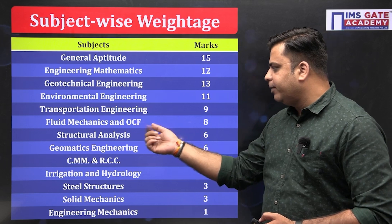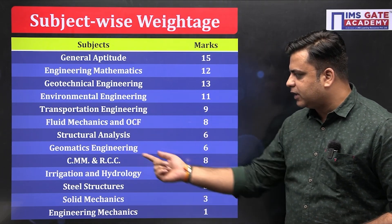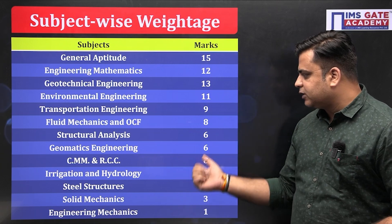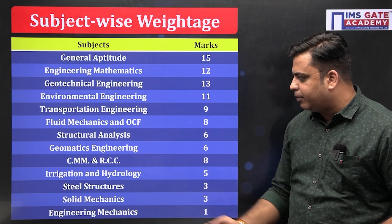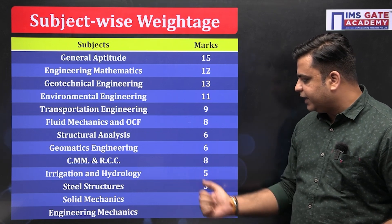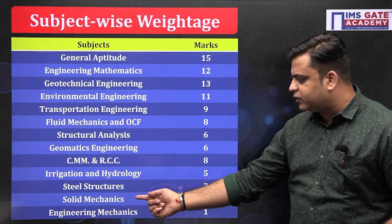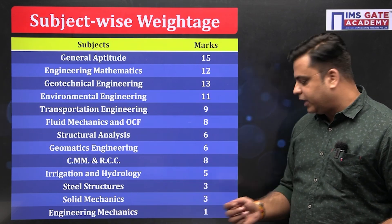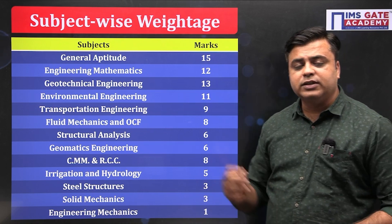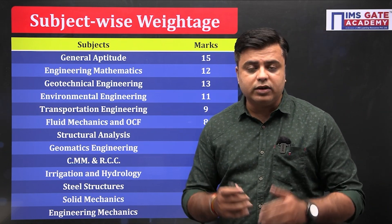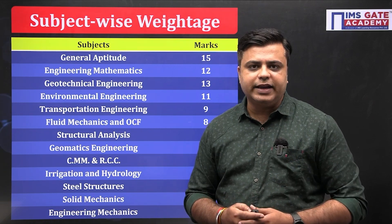Moving ahead: fluid mechanics and open channel flow is asked for 8 marks, structural analysis for 6 marks, geomatics for 6 marks, CMM and RCC have a weightage of 8 marks, irrigation and hydrology 5 marks, steel structure 3 marks, solid mechanics (also known as strength of material) 3 marks, and engineering mechanics 1 mark. This is the average weightage of the last 5 years of different subjects asked in the GATE examination.